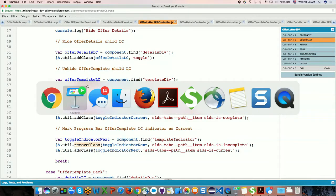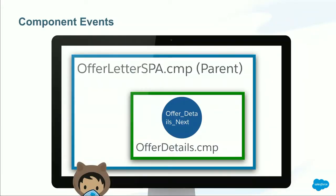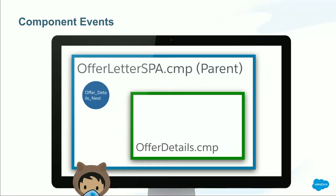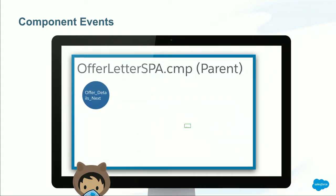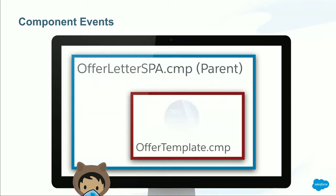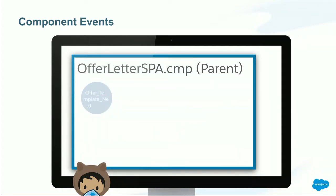Here's the visual representation of that. In blue is our parent Lightning component. In green, our first child Lightning component, Offer Details, fires that bubbling event with a specific message that bubbles up to the parent level, and then the parent controls the visibility of the different children. This is the approach we use to control visibility of child components in our SPA.